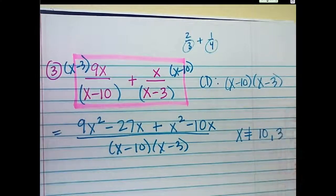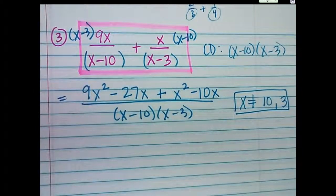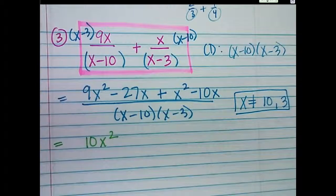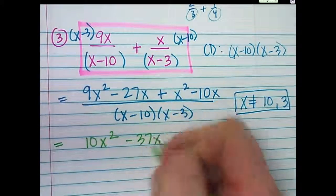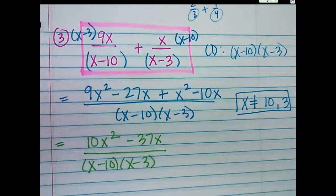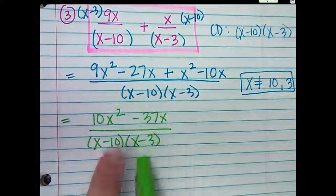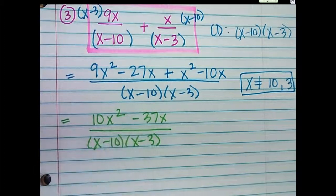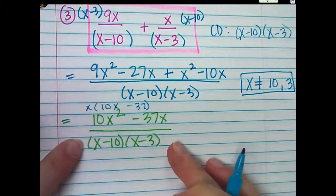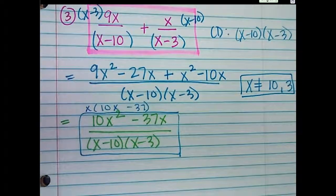So 9x squared minus 27x plus x squared minus 10x over x minus 10, x minus 3. Then we'll just simplify: 9x squared plus x squared is 10x squared. Negative 27x minus 10x is negative 37x. So I would look at the top and see — would this factor? If it does, is it going to cancel with one of these? The only thing you can take out here is an x, so you're left with 10x minus 37, which doesn't cancel. So this would be your answer.